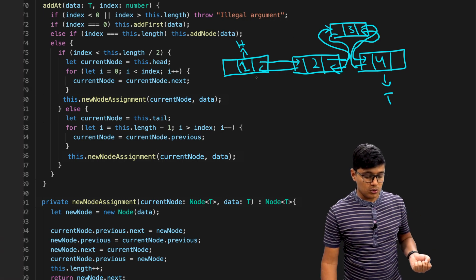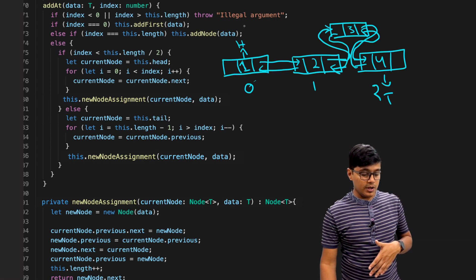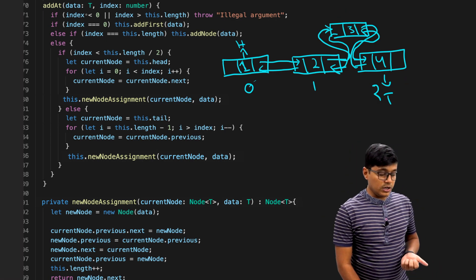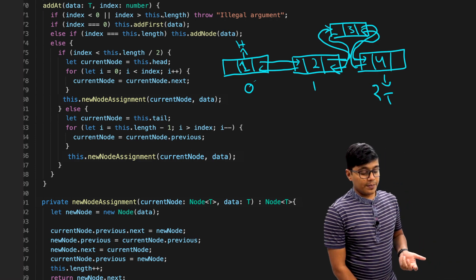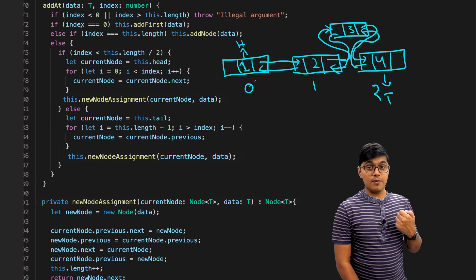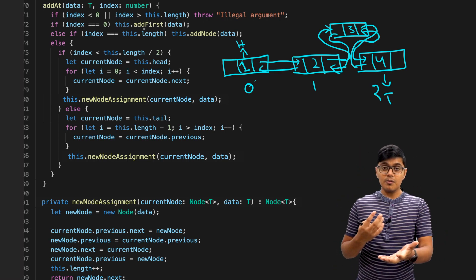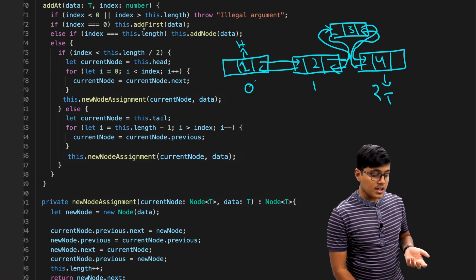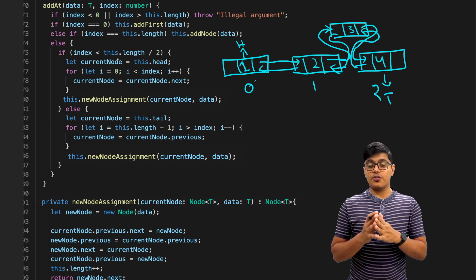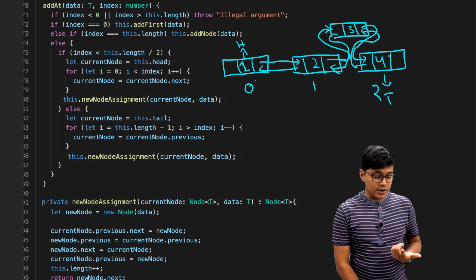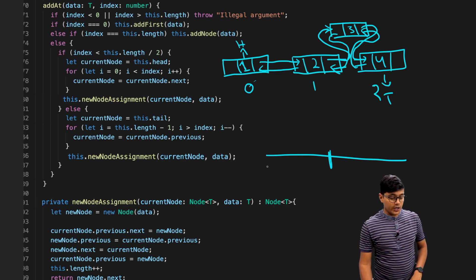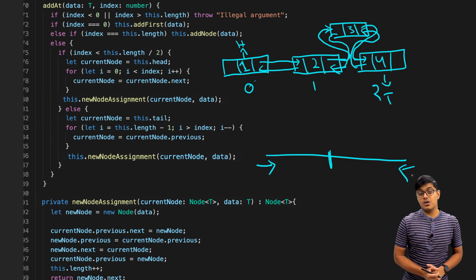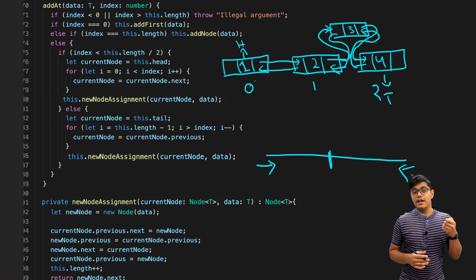In the code, we pass the data and the index — in our case index is 2 and data is 3. The first two lines check if the index is less than zero or greater than the length and throw an IllegalArgumentException. If index equals zero, we call addFirst. Otherwise, for adding in the middle, if the index is before the midpoint we traverse from the front; if after the midpoint we traverse from the back — this is a benefit of double linked list that you can't do in single linked list.